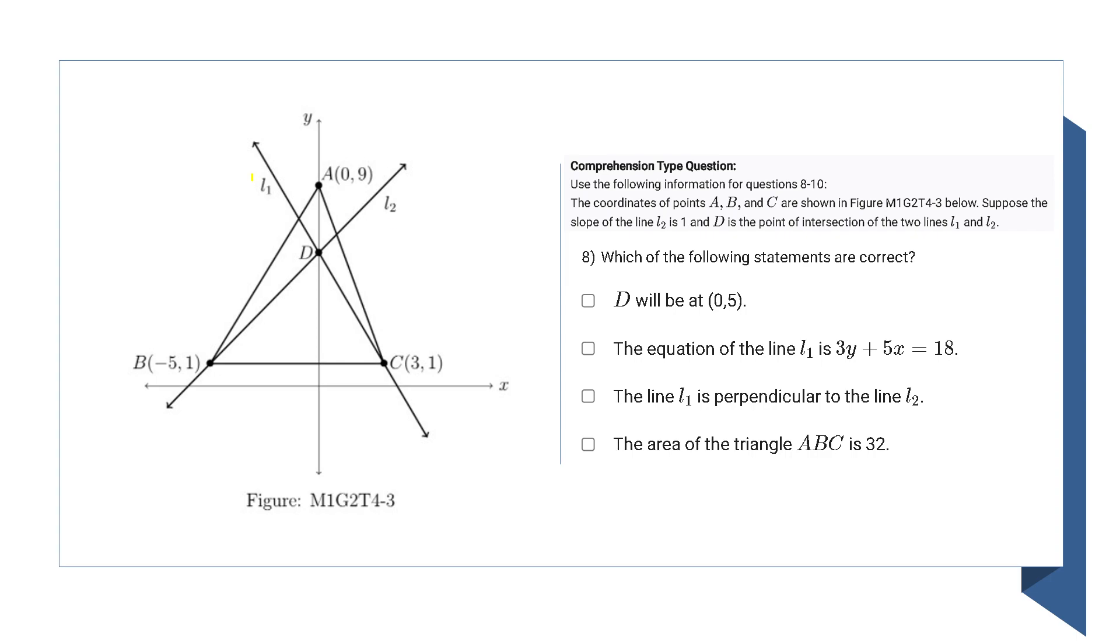In questions 8 to 10, it's a comprehension type. The coordinates of triangle ABC are shown in the figure. Suppose the slope of L2 is 1 and T is the intersection of L1 and L2. Now I need to find out the coordinates of T.